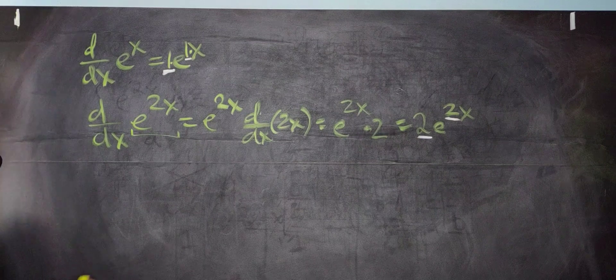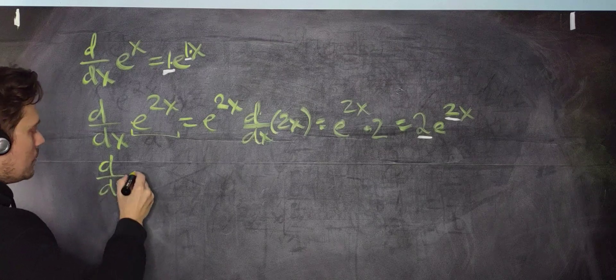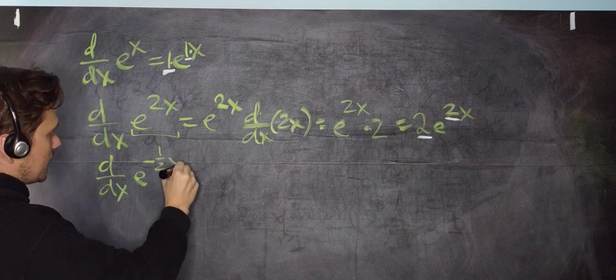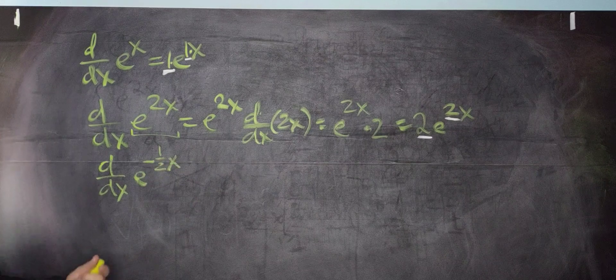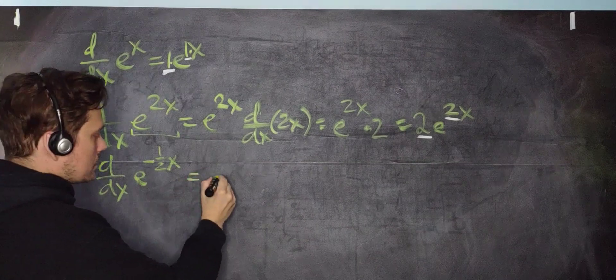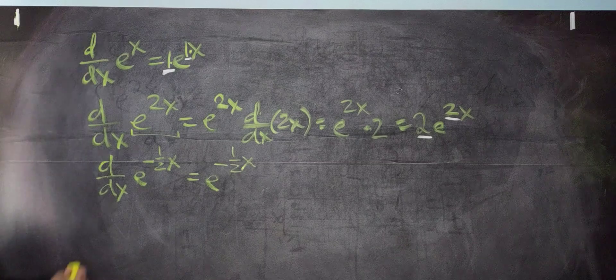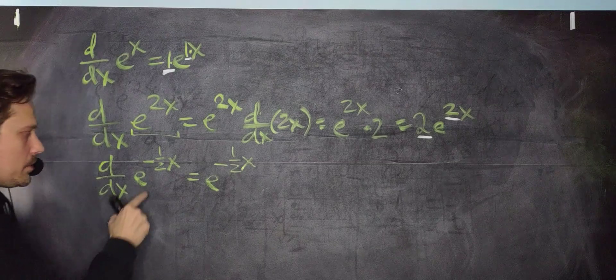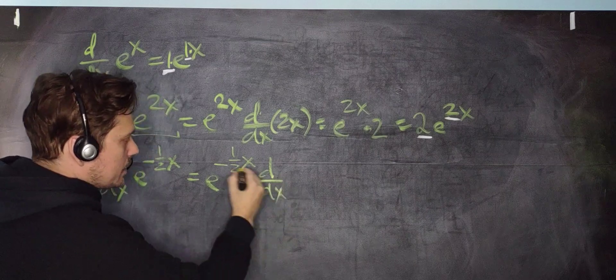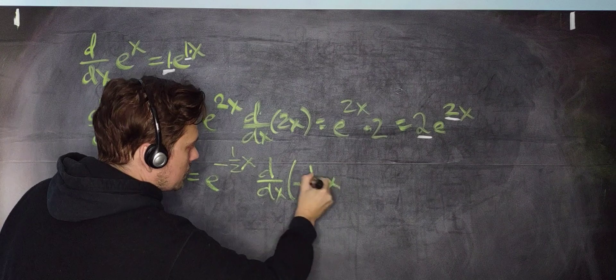Let's do one more here with that negative number. So imagine you differentiate with respect to x, for example, e to the negative 1 half x. Same principle will apply. So you keep this. So e to the negative 1 half x. First, you keep that completely unchanged and unaltered. And then you multiply by the derivative with respect to x of this negative 1 half x, like this.